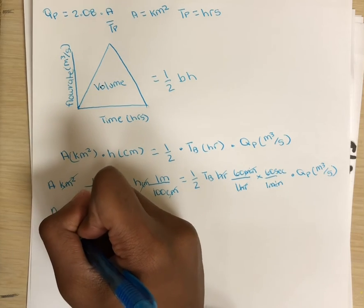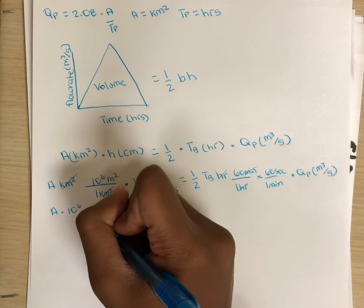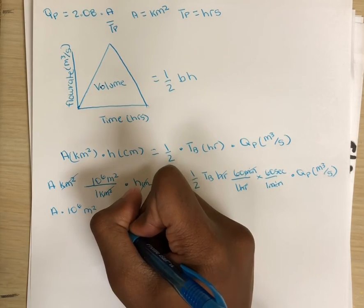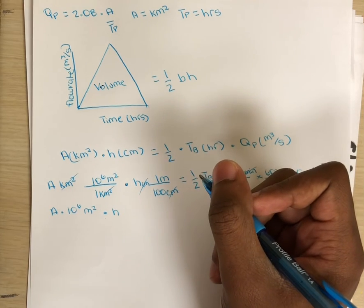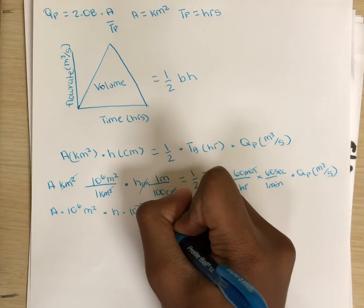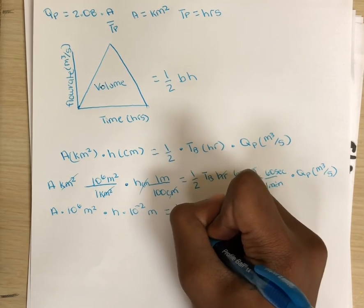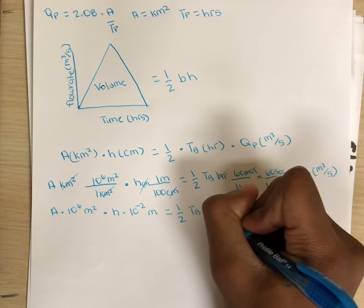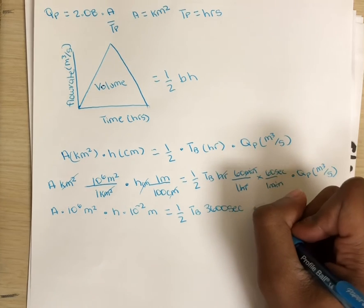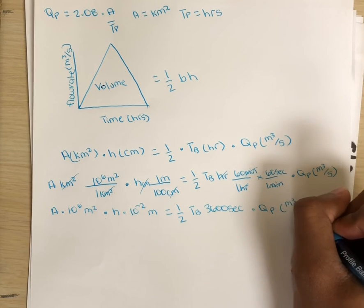We have area of the catchment, which is 10 to the sixth meters squared. We have the depth of the flow rate, which we'll put in scientific notation. So that makes that 10 to the negative 2 meters. The time base is 3,600 seconds multiplied by the flow rate, meters cubed per second.